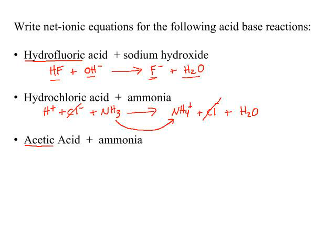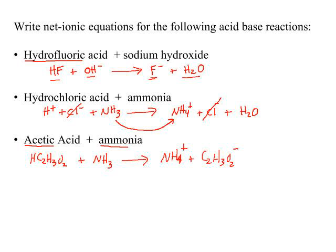Now you've got both a weak acid and a weak base. Write your acetic acid, HC2H3O2, non-ionized. Your ammonia would also not be ionized. Your product would be ammonium acetate. No spectator ions would cancel. So when you have a weak acid and a weak base, this would be your typical format: HC2H3O2 + NH3 → NH4+ + C2H3O2-.